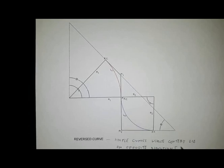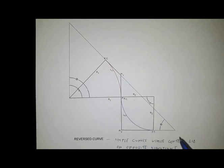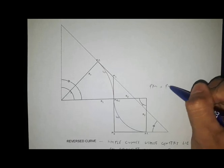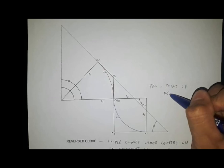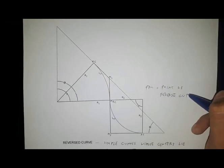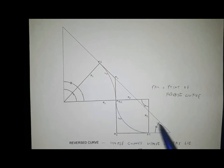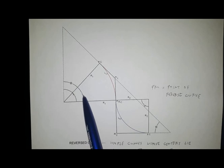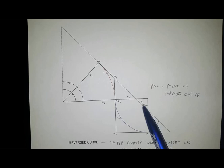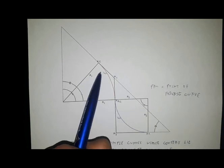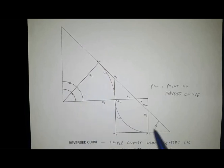It has the same elements as the simple curve except for the PRC — PRC stands for Point of Reverse Curve. Here we have a figure with two different values of radii: R1 and R2, the common radius, the central angle of the first curve I1, and the central angle of the second curve I2. This is angle theta, where the tangents of the first curve and the second curve converge.